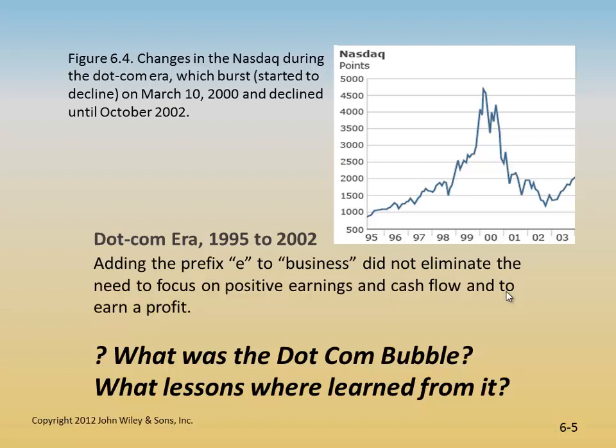In the 8th edition, we look at the dot-com era, which ran from 1995 to 2002. It added the prefix 'E' to business — electronic business management, electronic records management, electronic customer relationship management — everything got an 'E'. It also did not limit the need to focus on positive earnings and cash flow to earn profit. The dot-com bubble extended from 1995 to 2000 and was limited to companies that were not only brick-and-mortar but also had a strong internet presence, underscored by business models requiring profit and huge sums from venture capitalists. You need to understand and answer what this bubble was and what lessons were learned from it — this is on pages 161–162 in the 8th edition.